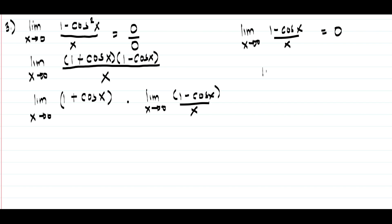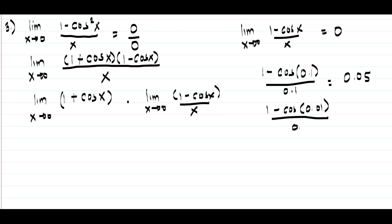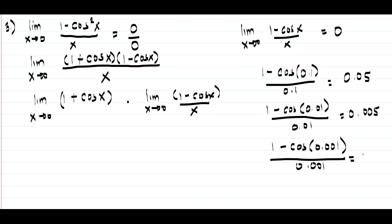For example, (1 minus cosine 0.1) divided by 0.1 gives 0.05, and (1 minus cosine 0.01) divided by 0.01 gives 0.005. As the value of x approaches 0, the value of the function approaches 0. So the limit of (1 minus cosine x) over x as x approaches 0 is always equal to 0.